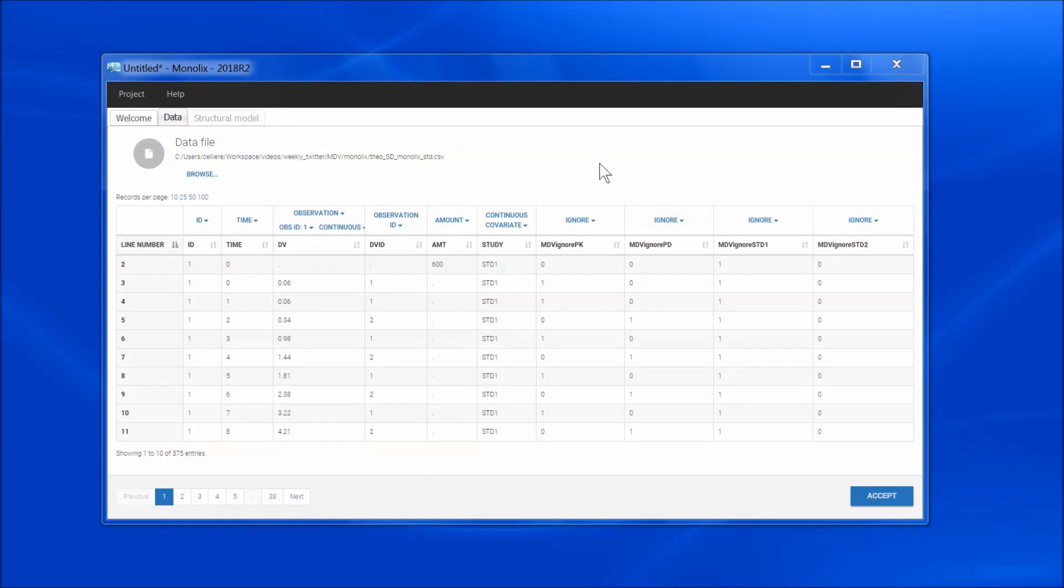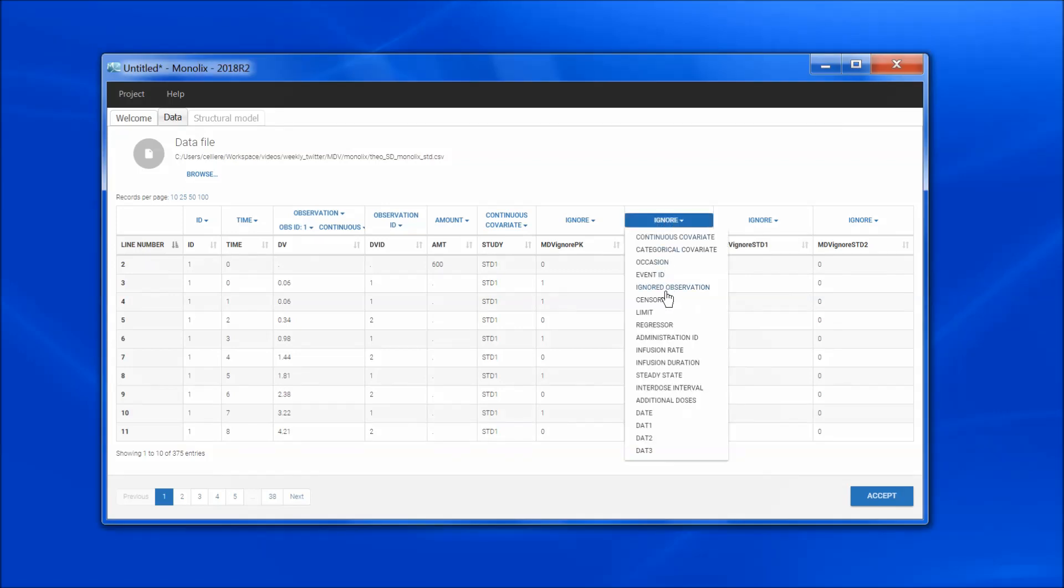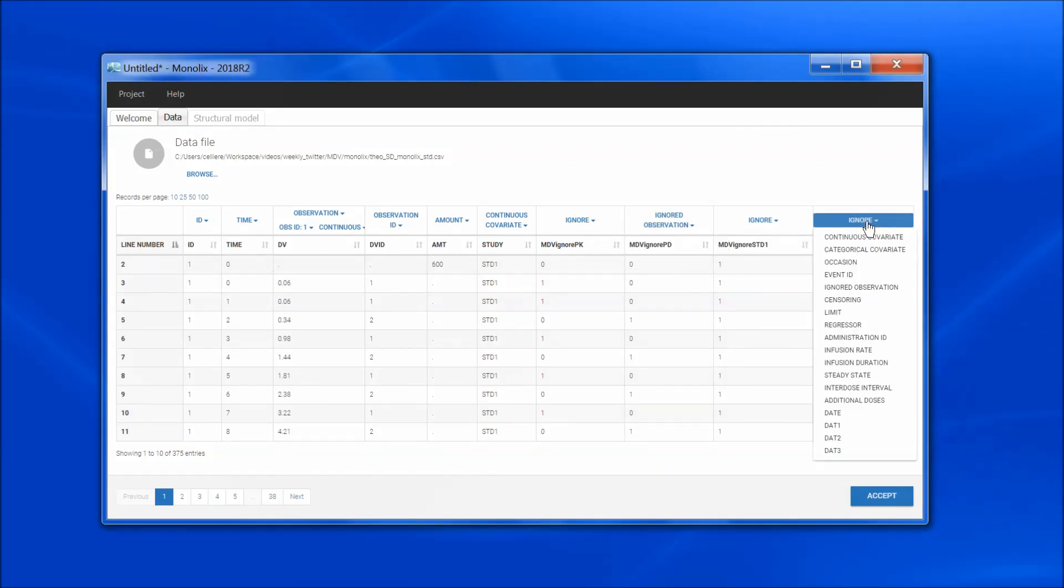When loading the dataset in Monolix, I can then choose to tag these columns as ignored observations or not. For instance, for my first run, I want to work only with the PK data of study one, which is dense. So I choose to set the PD data as ignored observation and study two as ignored observation.